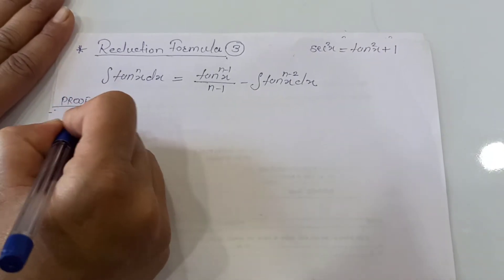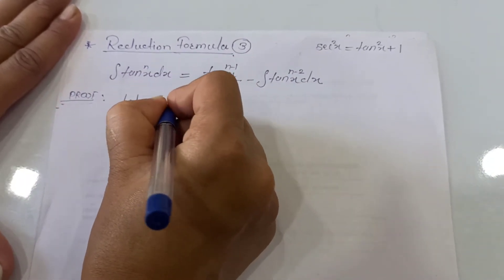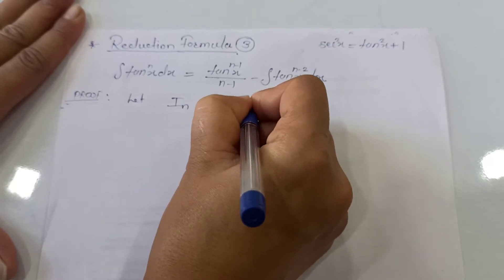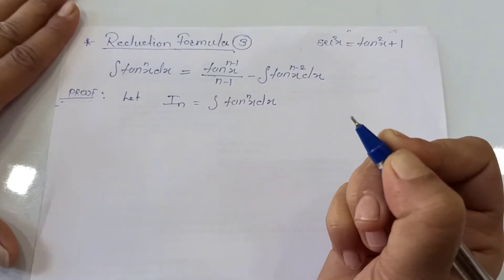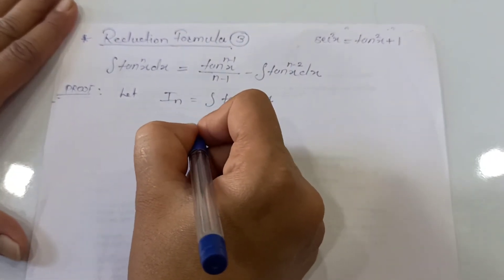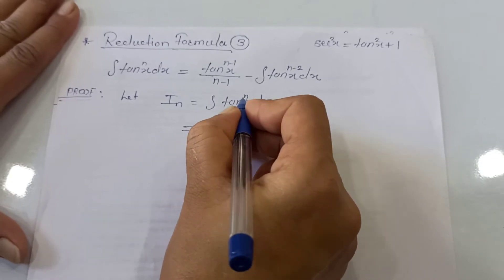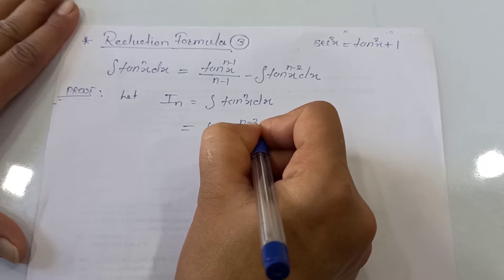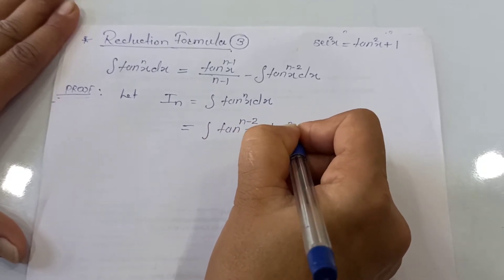Let's start with the proof. Let I_n be equal to the integration of tan raised to n times x dx. This is the notation we will use for proving this reduction formula. Instead of tan raised to n, I will write tan raised to n minus 2 times x, multiplied by tan squared x, dx.